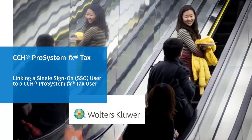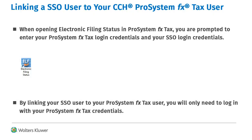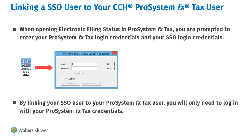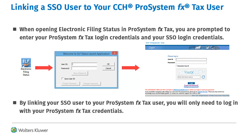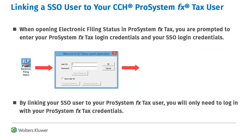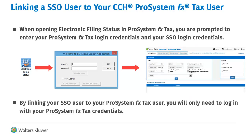Welcome to the video on linking a single sign-on (SSO) user to a CCH ProSystem Fx Tax user. When opening electronic filing status, you are prompted to log in twice — once with your ProSystem Fx Tax credentials, and again with your SSO user ID. By linking your SSO user ID with your ProSystem Fx Tax user, you only need to log in once with your ProSystem Fx Tax user ID and password to open electronic filing status.